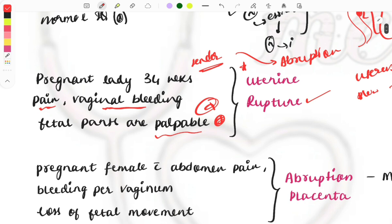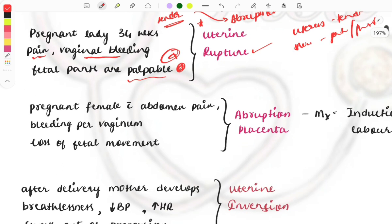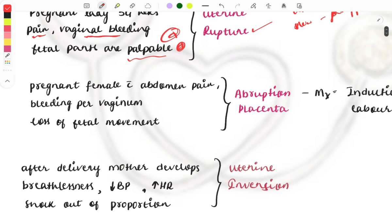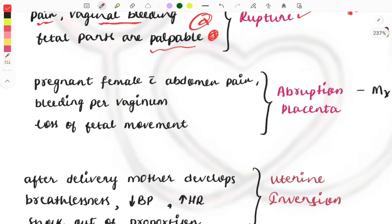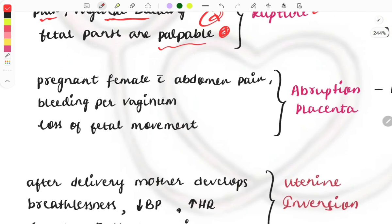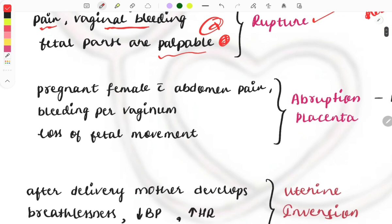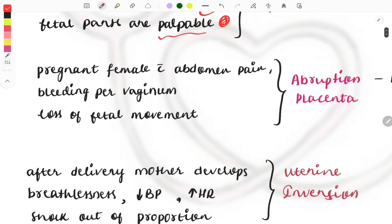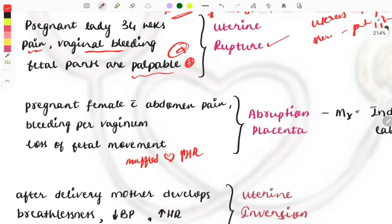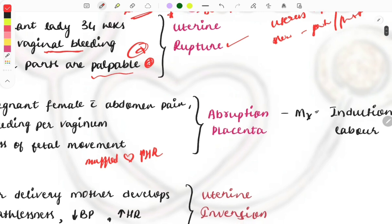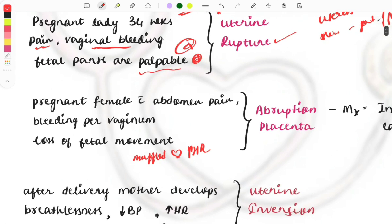In abruption, the placenta is separated early. The uterus is intact, so we will not be able to palpate the fetal parts easily. A pregnant female with abdomen pain, bleeding per vaginum, and loss of fetal movement - or they can describe muffled heart sound of the fetus or decreased fetal heart rate - this is placenta abruption.